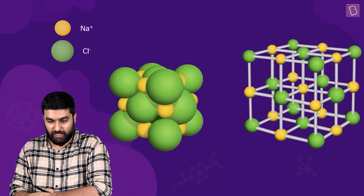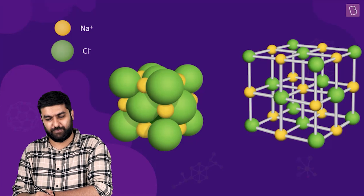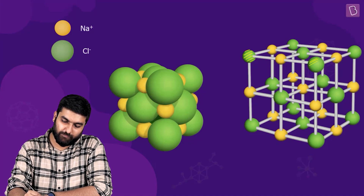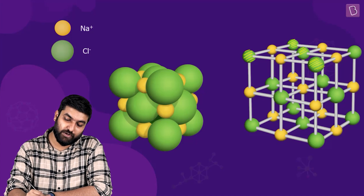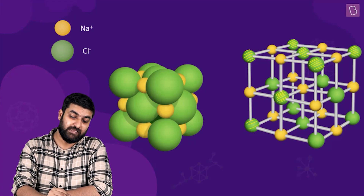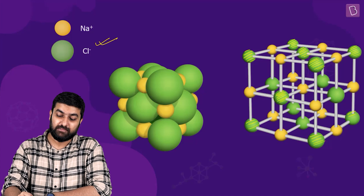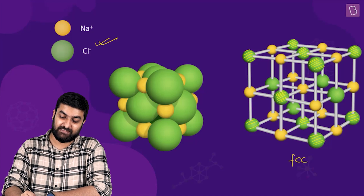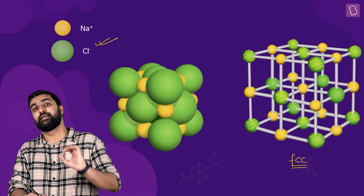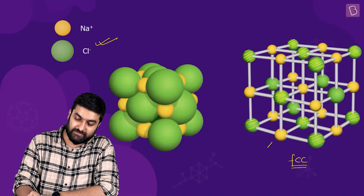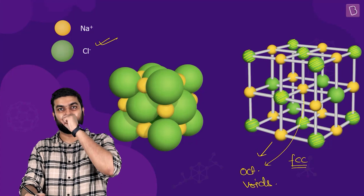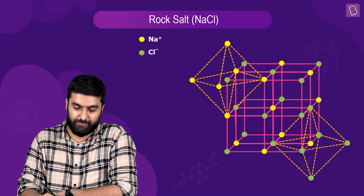Now look at the structure and try to figure out what's happening. Which lattice is being formed? The green ones — which are essentially the Cl⁻ ions — are occupying the lattice points, and this is an FCC arrangement. The yellow ones are occupying the octahedral voids. All the edge centers and the body center are octahedral voids.